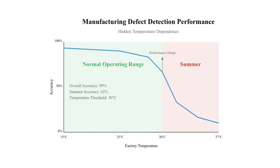For example, at first glance, a manufacturing defect detection system seems excellent with 99% accuracy in quality control. However, when we analyze error patterns across different conditions, we discovered a critical flaw.